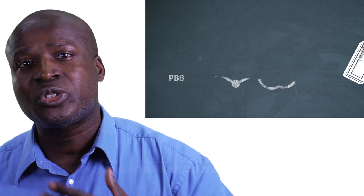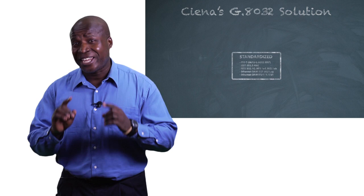G8032 sub-rings can provide a generalized dual home access solution to these types of networks. Siena's G8032 solution has several dimensions to it. One is based on standards.